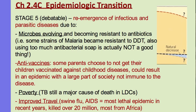Just as there is a debatable stage 5 in the demographic transition — where birth rates continue declining and death rates begin to rise above birth rates, causing a declining population — there is also a stage 5 epidemiological transition. This is the re-emergence of infectious and parasitic diseases, almost like returning to stage 1. This happens partly because microbes evolve and people overuse antibiotics, causing microbes to become resistant so that antibiotics can no longer cure those infectious diseases.